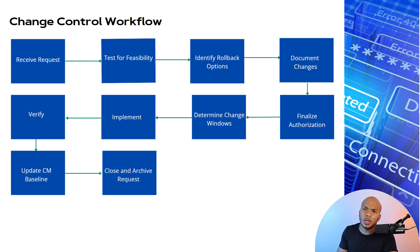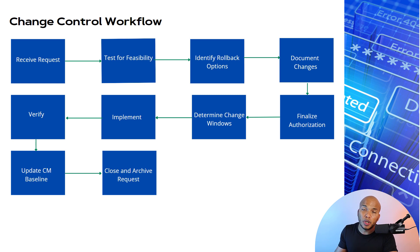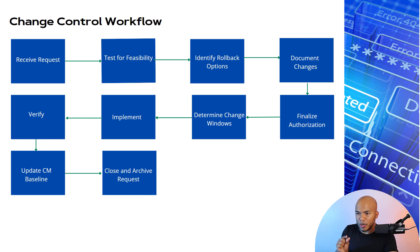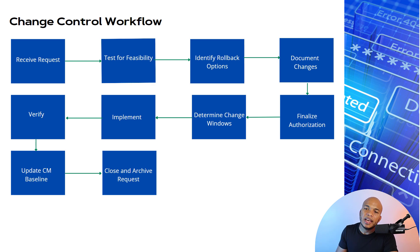This is typically your change control workflow. You receive a request — say, we need to make a change to the anti-malware, the firewall, or the security policy. You test for feasibility: can we actually implement this control? Then you identify rollback options in case the implementation fails. You document whatever changes will occur, finalize the authorization, and determine the change windows. Then you implement, verify, update the change management baseline, and eventually close and archive the request.